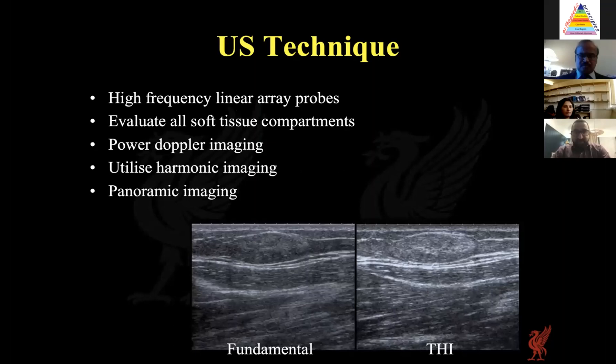Ultrasound is an excellent modality used very frequently in practice, but it is very operator dependent. General tips: use a high frequency probe for good resolution, evaluate all soft tissue compartments, and use additional tools such as power Doppler or harmonic imaging to assess vascularity or define lesion boundaries. Using the harmonic imaging setting, you can define the margins of a lesion much better than with the fundamental ultrasound image.